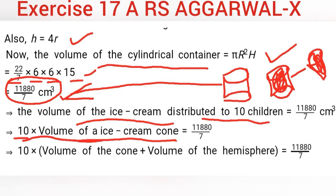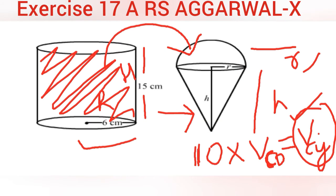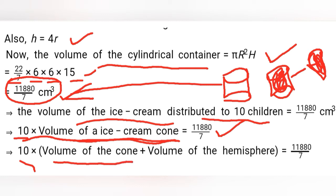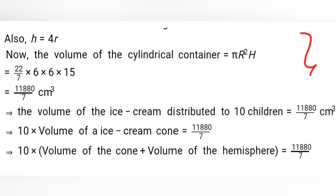So we have: 10 × volume of ice cream cone = volume of the cylinder. The ice cream cone has two shapes: a conical portion at the bottom and a hemispherical top. Therefore, 10 × (volume of cone + volume of hemisphere) = 11880/7.